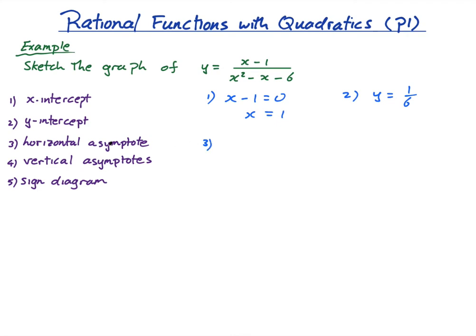Step three: the horizontal asymptote. When the quadratic is on the bottom, the horizontal asymptote is always y equals zero. The horizontal asymptote is what's happening when x is really, really large or really, really small. Imagine x is a million — you'd have a million over a million squared, which is essentially one over a million, very very small. Because the degree of the denominator polynomial is bigger than the degree of the linear numerator, as x gets really large, y approaches zero. So the horizontal asymptote is y equals zero.